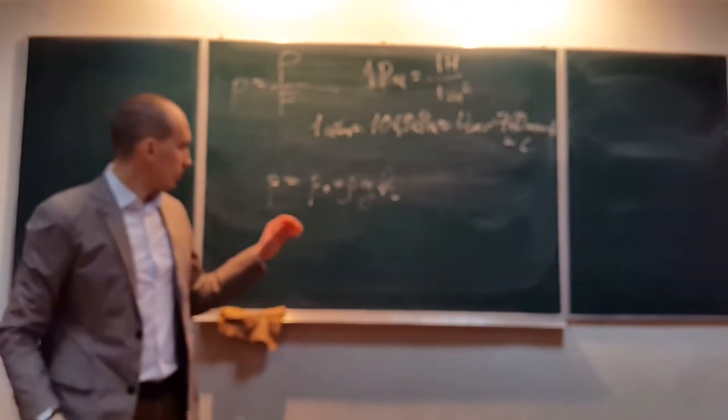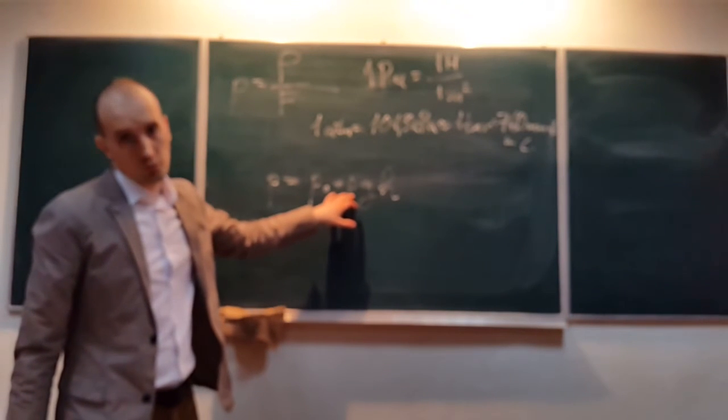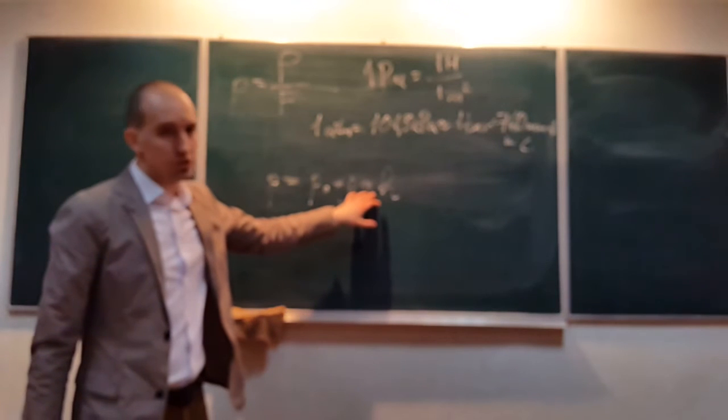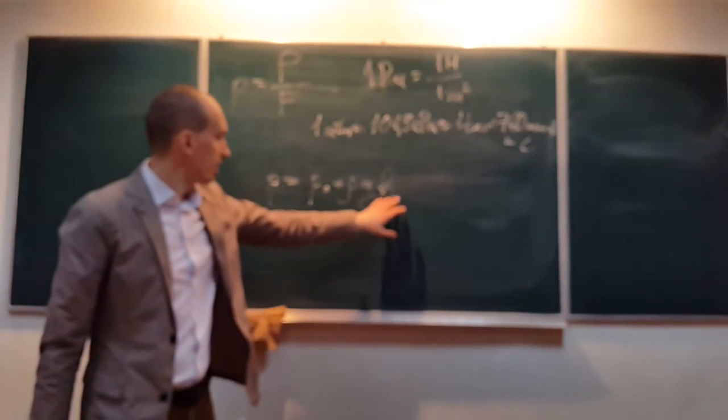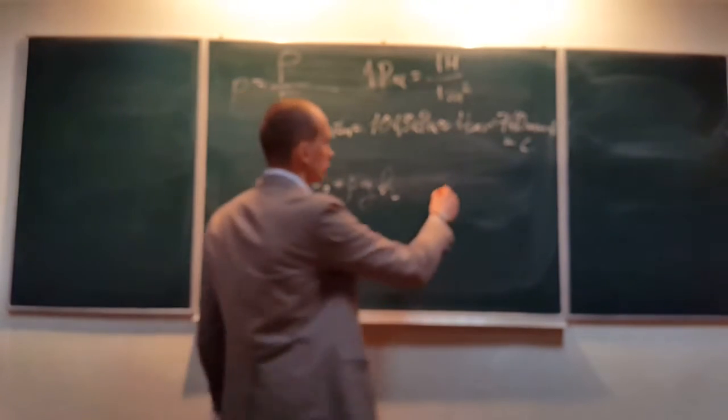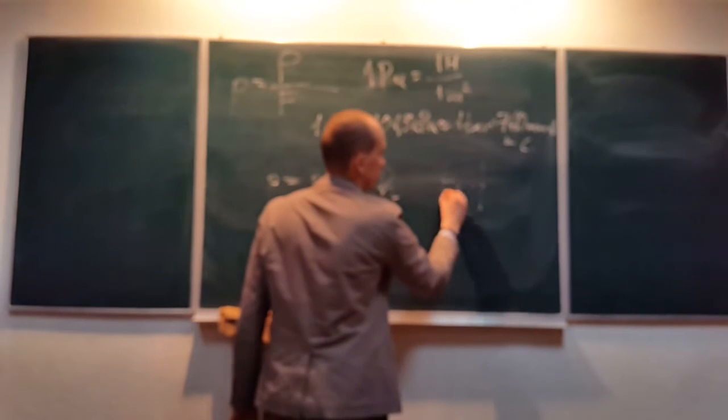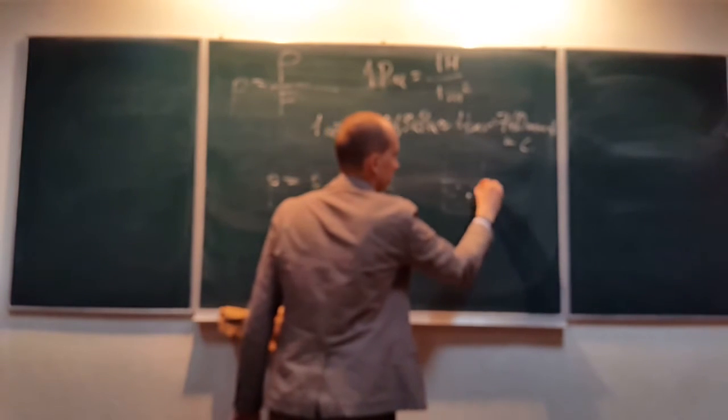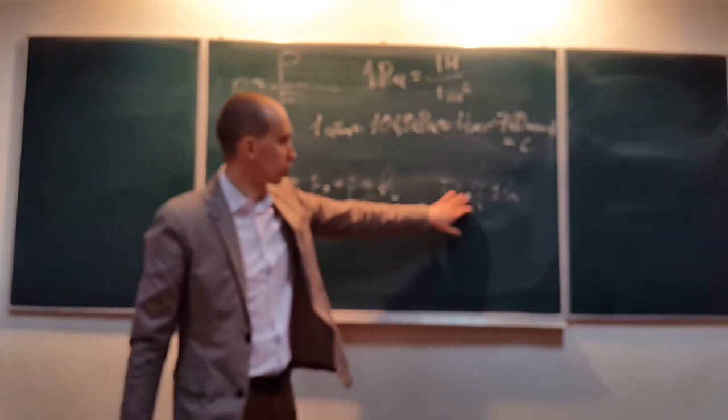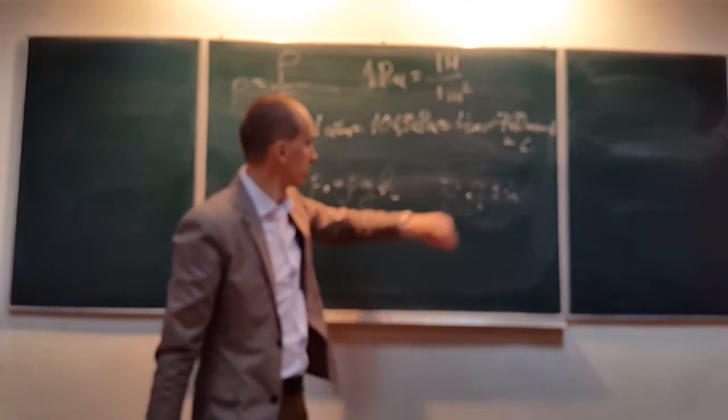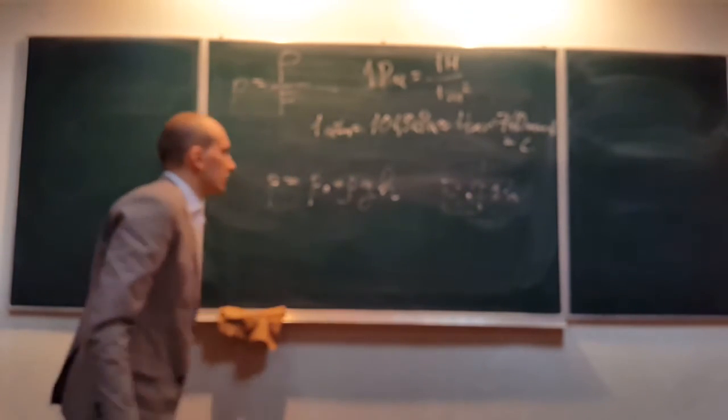In this equation, this is external pressure, density of liquid, acceleration due to gravitation, and height of water column, or in other words, it is depth. If you want to find the pressure at this point, we will use this depth or this height.